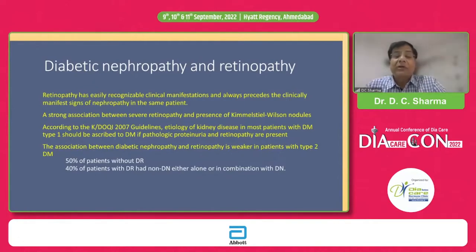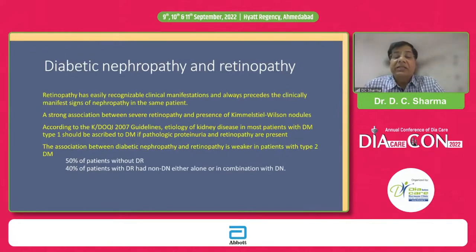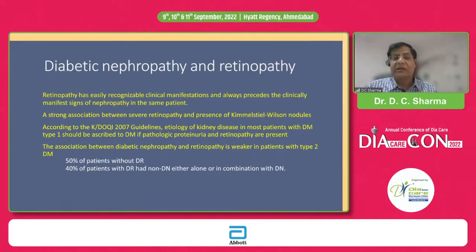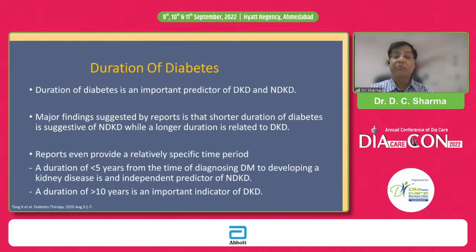The association of retinopathy with nephropathy is very strong in type 1 patients, but not so in type 2. In fact, 50 percent of type 2 diabetic patients can have diabetic nephropathy without frank diabetic retinopathy, and 40 percent of patients can have diabetic retinopathy with non-diabetic nephropathy — either alone or on a background of diabetic nephropathy. So the association is weaker in type 2, but if retinal changes are absent, one should still revise the diagnosis and look again at the cause of renal disease.